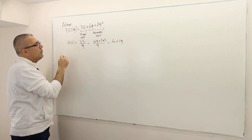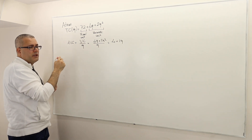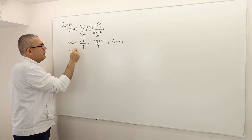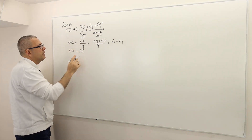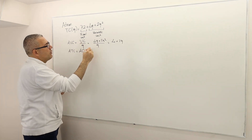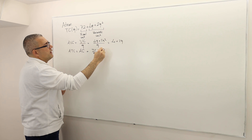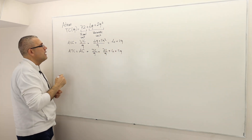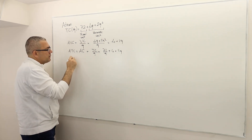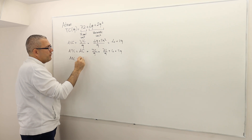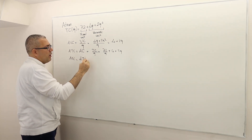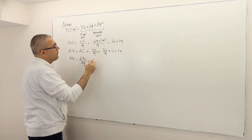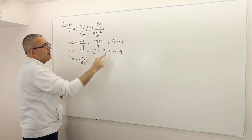For average total cost — some textbooks call it average cost, some call it average total cost — it is total cost divided by quantity: ATC = 72/q + 4 + 2q. The marginal cost is always the derivative of the total cost function with respect to quantity, giving MC = 4 + 4q. Note that marginal cost is not exactly equal to average variable cost, so be careful.